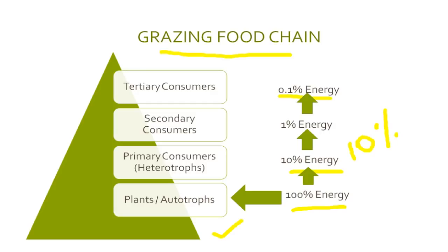Typical examples: plants or autotrophs can be grass or plants. Primary consumers or heterotrophs can be deer, rabbit, grasshopper, and man. Secondary consumers can be wolf, snake, lizard, and man. Tertiary consumers are eagle, lion, and vulture. In an aquatic grazing food chain, phytoplanktons are at the lowest trophic level, above that zooplanktons, then small fish, large fish, and at the top, shark.